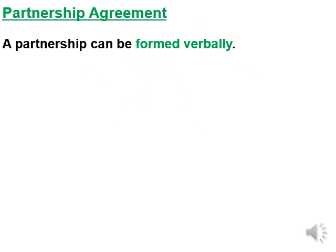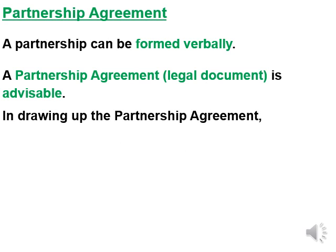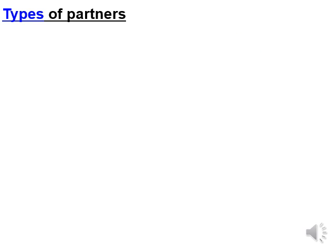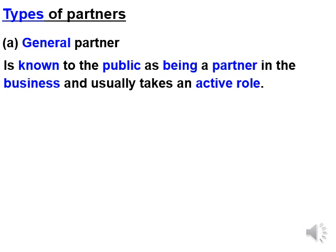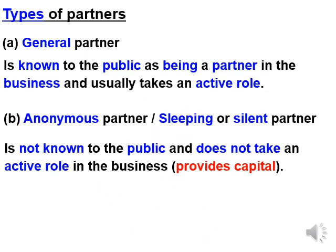A partnership can be formed verbally, but it's not advisable. A partnership agreement, a legal document, is advisable and is set up by an attorney. When drawing up a partnership agreement, it is necessary to consider the role that each partner will fill. There are also different types of partners. The general partner is known to the public as being a partner in the business and usually takes an active role, actually working at the business. An anonymous, sleeping, or silent partner is not known to the public, does not take an active role, and usually just provides capital.